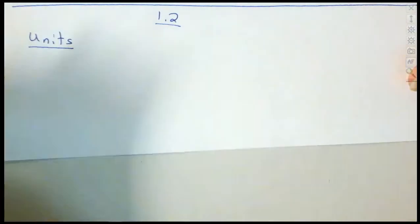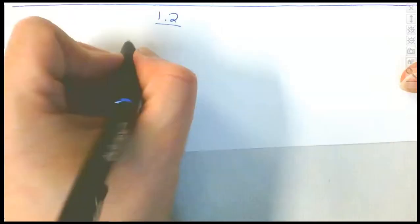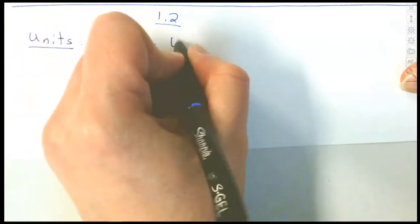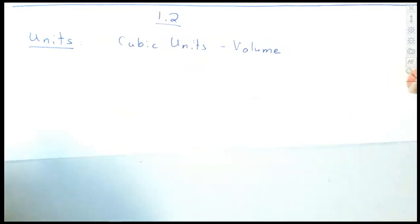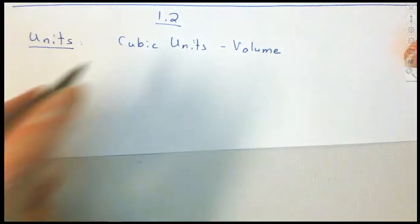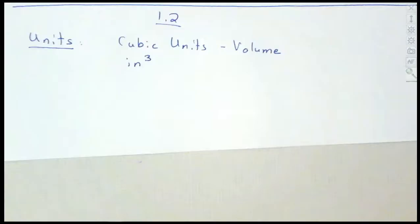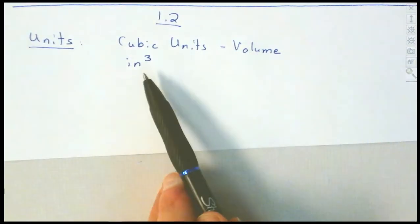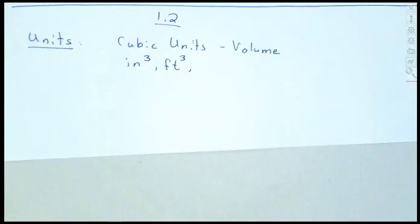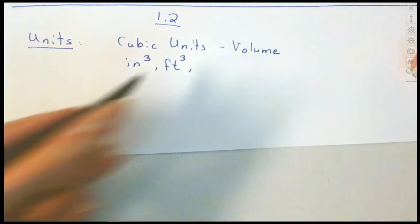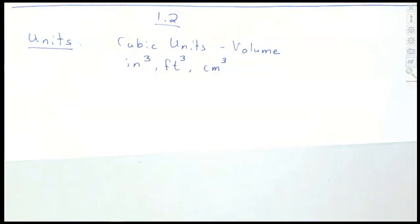Let's start with volume and cubic units. When we talk about cubic units, we're mainly talking about volume. For example, your car engine is measured by how much it displaces — that's cubic inches. You can have cubic feet, which might be the volume of a room. You can also have cubic centimeters, cubic milliliters. Volume can also mean milliliters and liters.